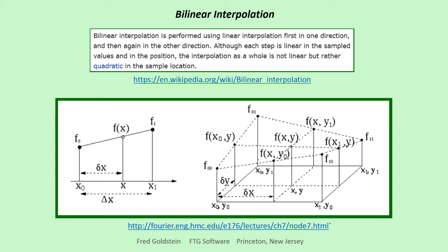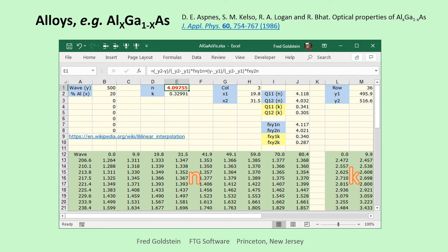Bilinear interpolation is performed using linear interpolation first in one direction and then again in the other direction. The graphic makes it look more complicated than it really is.